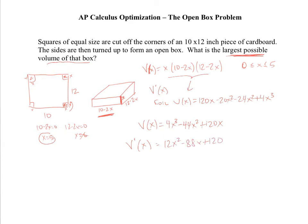Well, what do we want to do when we're getting critical points? We set this equal to 0. So let's go ahead and set this equal to 0. I could take out a 4, and I'm left with 3x squared minus 22x plus 30.